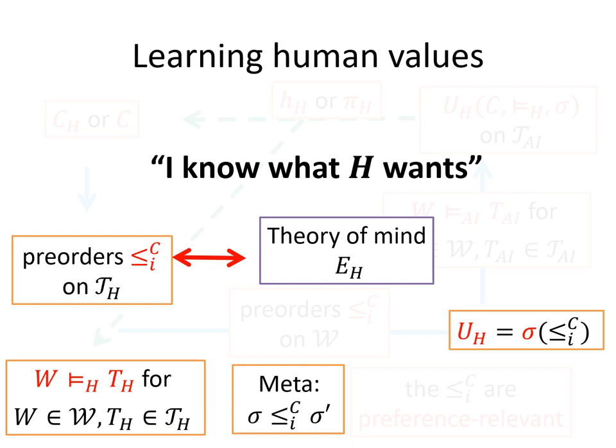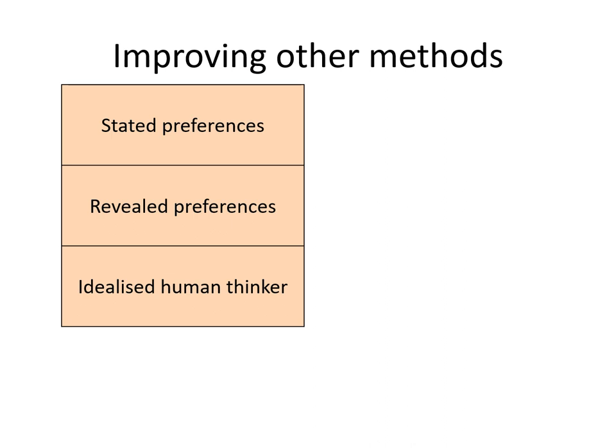The key parts of this research agenda are: the mental models, the human symbol grounding, the meta-preferences, and the synthesis process sigma that puts all these pre-orders together. The meta-preferences are generally seen as preferences over different sigmas. The theory of mind — the empathy modules — gives us privileged access to the pre-orders and mental models. When we say we know what other people want, we are using our own theory of mind to access their internal models. This method, even if not carried out fully, can be used to improve other methods.